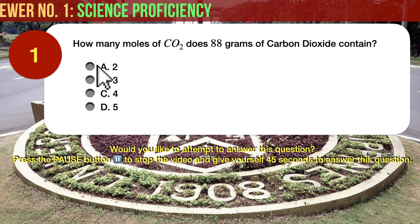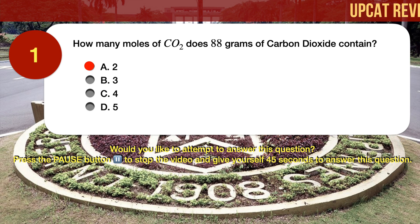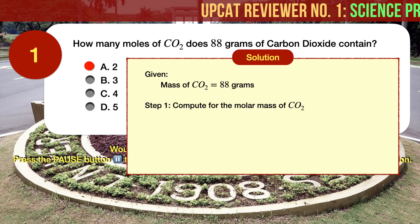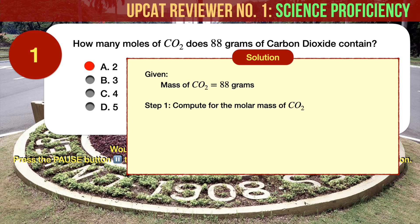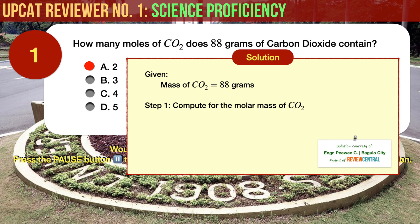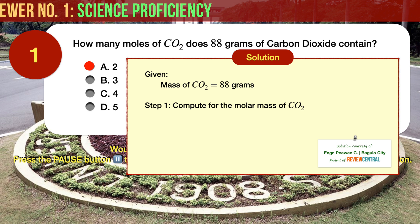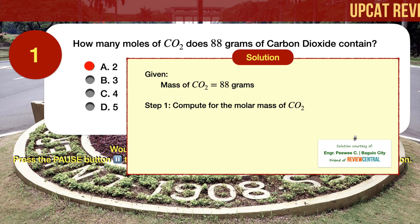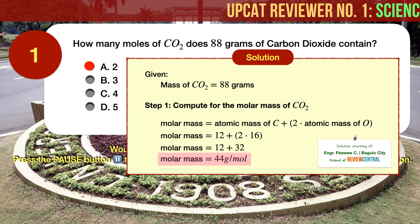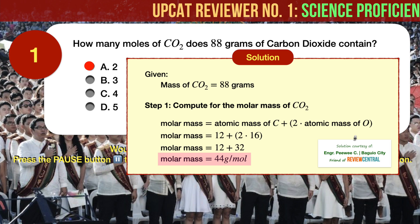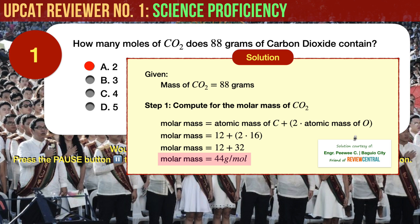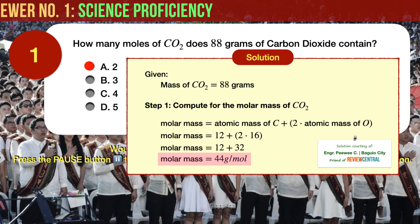The correct answer is A. 88 grams of carbon dioxide contains 2 moles. This is a typical chemistry problem. One way to obtain the number of moles is by dividing the mass in grams by the molar mass of an element or molecule. Given the mass of carbon dioxide to be 88 grams, let's compute for the molar mass of carbon dioxide. Molar mass is equal to the atomic mass of carbon plus 2 times the atomic mass of oxygen. The atomic masses of carbon and oxygen are 12 and 16, respectively. Therefore, we arrive at a molar mass of 44 grams per mole.